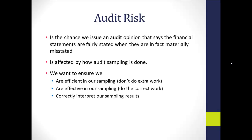We want to ensure that we are efficient in our use of sampling — we don't want to do extra work, such as examining samples that are unnecessarily too large. We want sampling to be effective, meaning we examine the most helpful controls, look at the right subsidiary balances, and correctly interpret our sampling results.